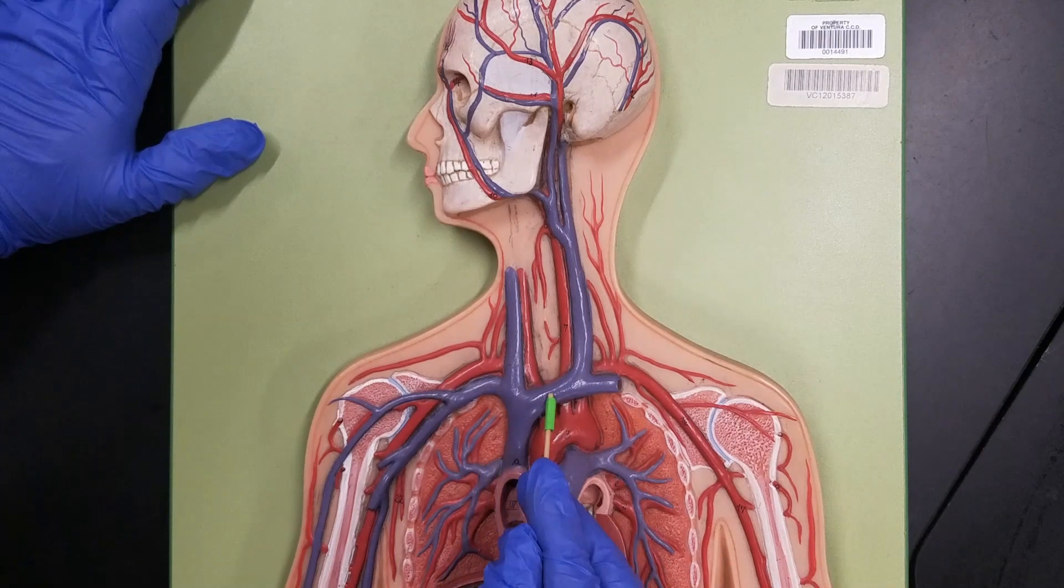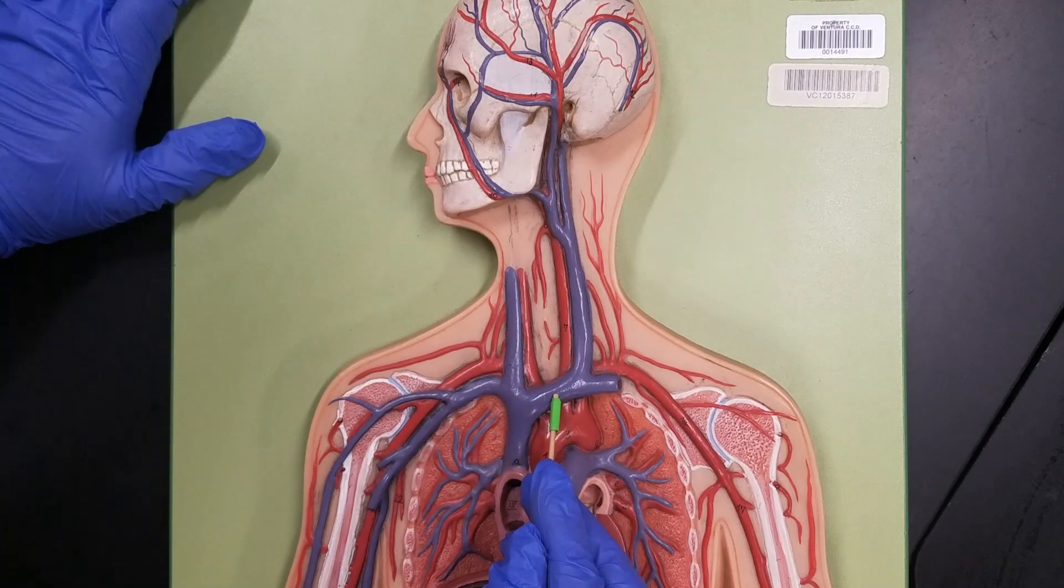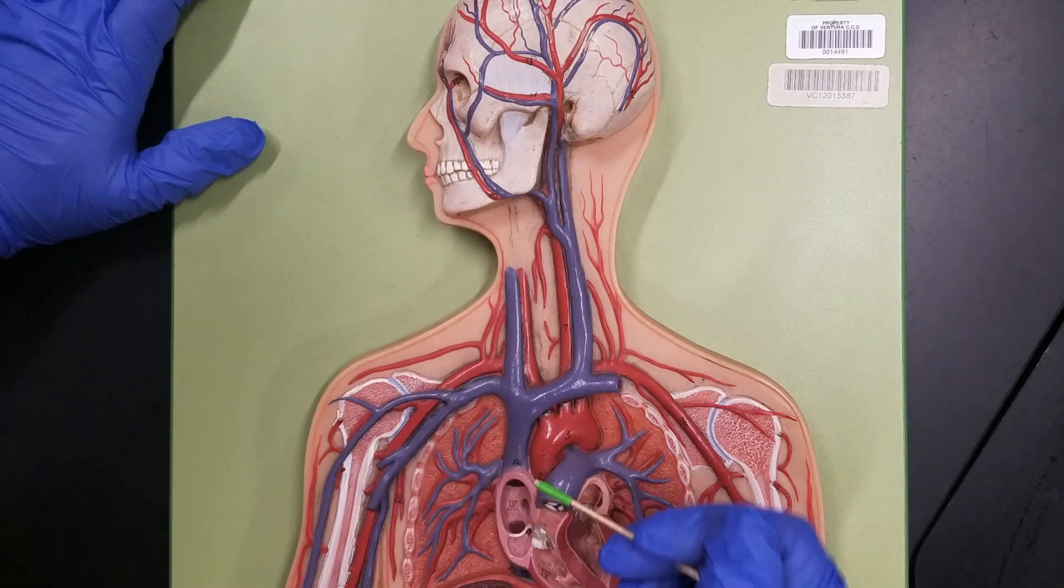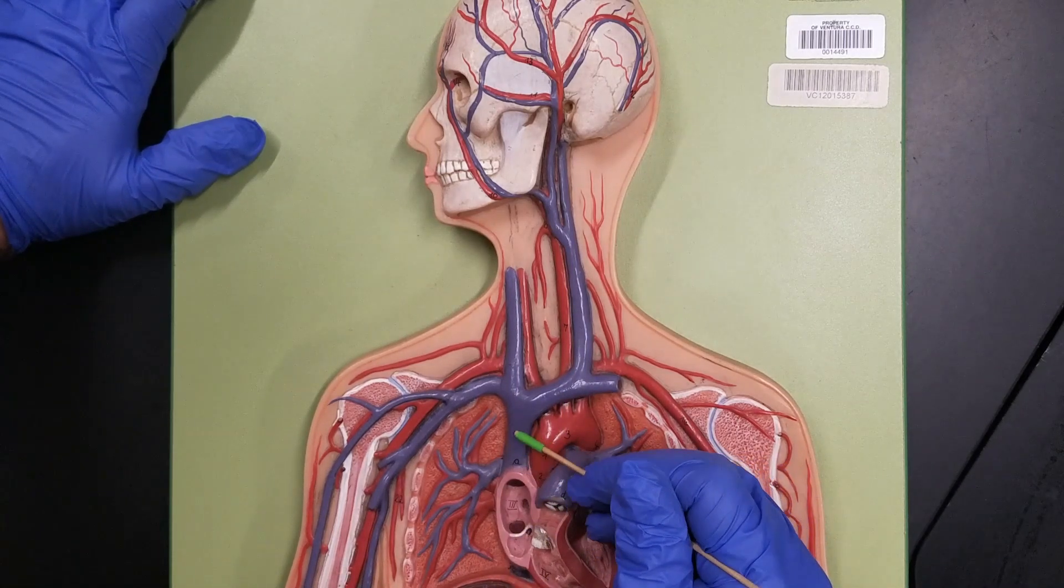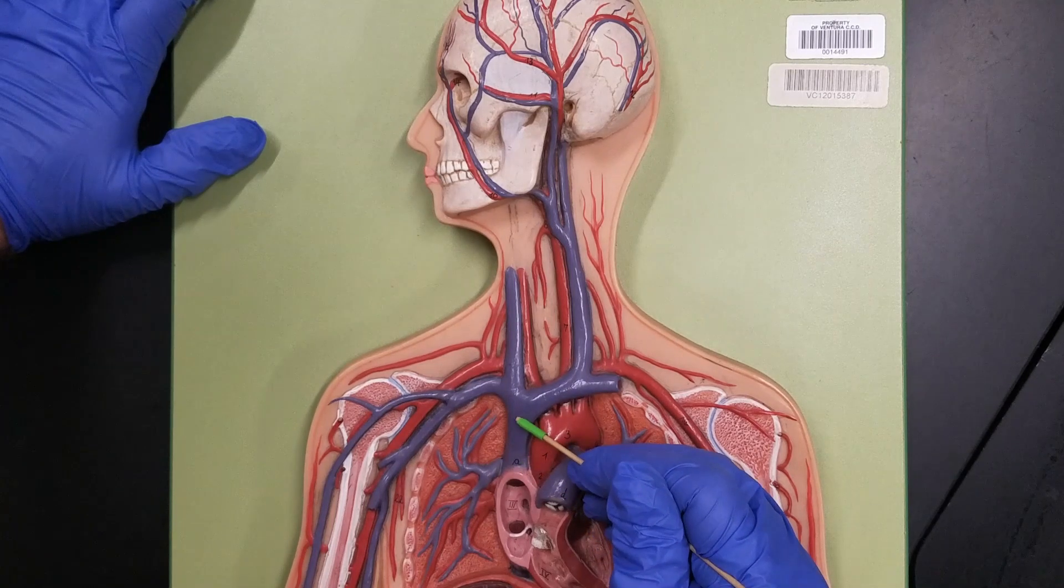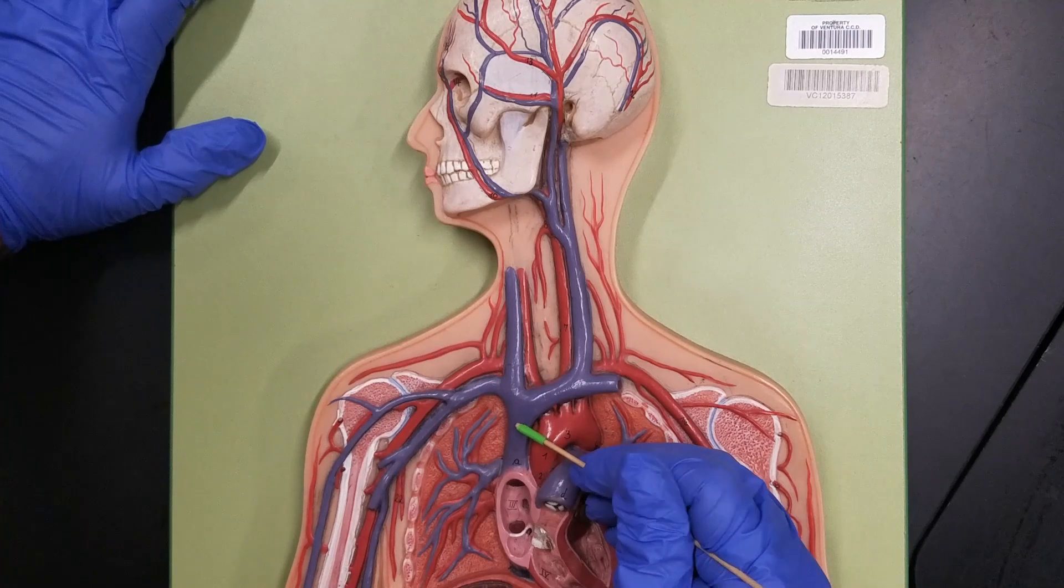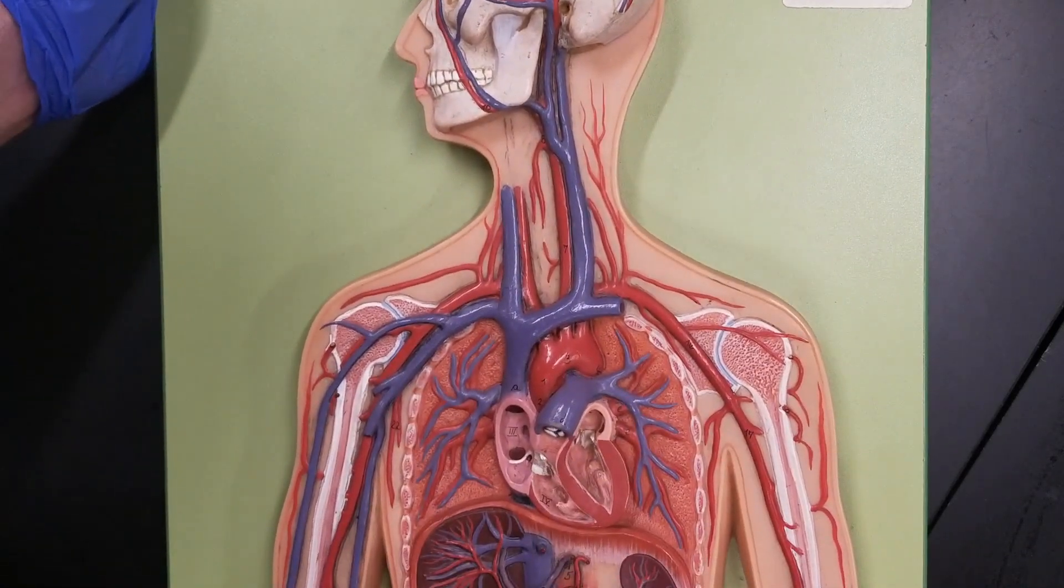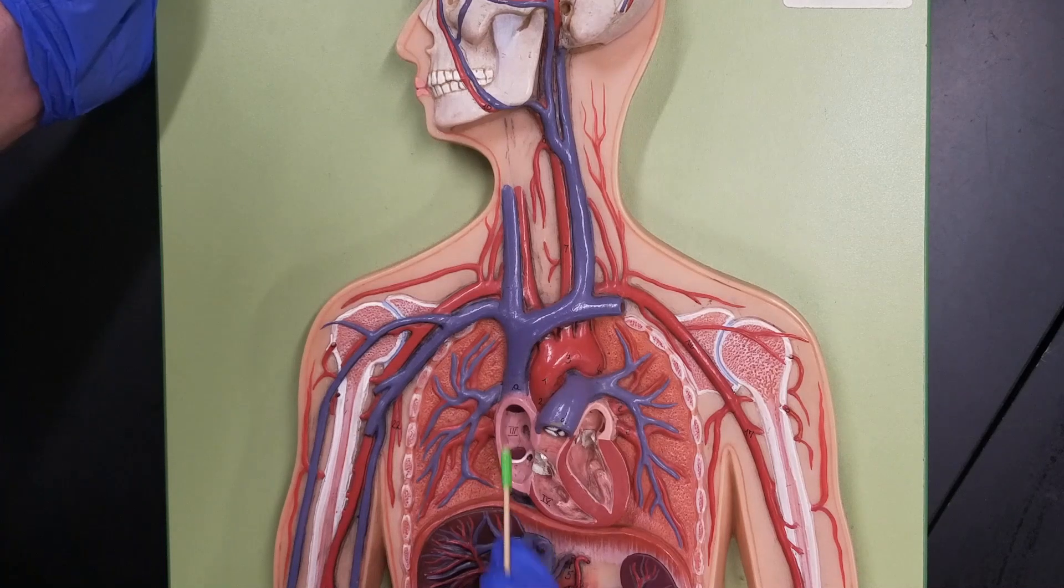Where my two brachiocephalic veins merge together, my right brachiocephalic and my left brachiocephalic, that forms this large venous structure called the superior vena cava. And the superior vena cava is draining blood from above the heart. And we can see that it goes directly into our right atrium of the heart.